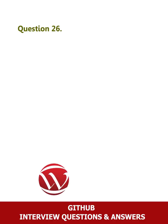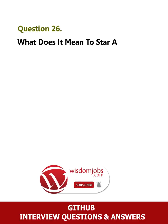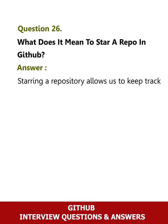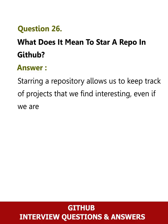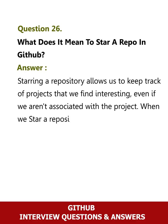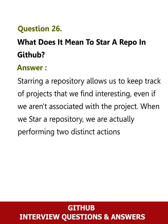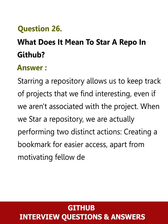Question 26: What does it mean to star a repo in GitHub? Answer: Starring a repository allows us to keep track of projects that we find interesting, even if we aren't associated with the project. When we star a repository, we are performing two distinct actions: creating a bookmark for easier access, and motivating fellow developers by rating their work.